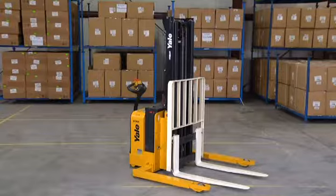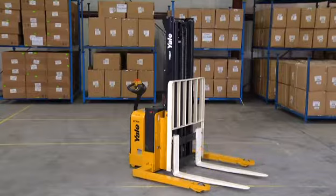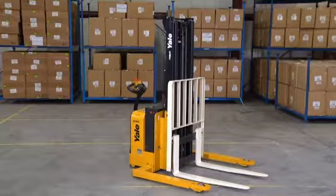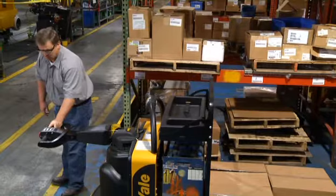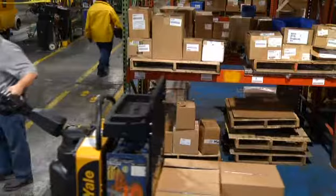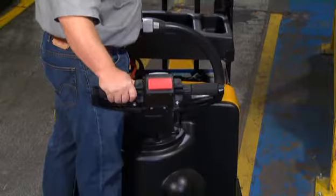Some rider models also have a high-speed switch, which is used to increase speed when traveling long distances. Only engage it when standing in the operator's area. Gauges include a battery indicator hour meter or separate battery indicator and hour meter. High-lift models are equipped with masts of different heights, with the forks and carriage mounted on the front of the mast.